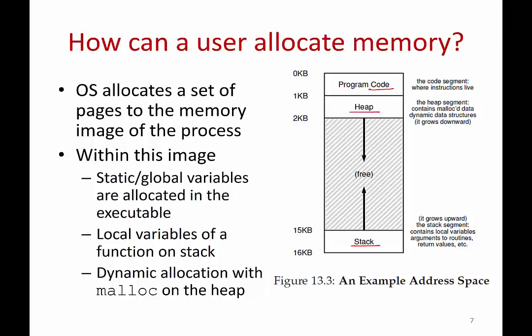In your program, depending on where you create a variable — whether it's a global variable, a local variable in a function, or a variable created via malloc — memory will be allocated in different parts of the memory image of the process. When you malloc, the memory is actually allocated from the heap while your program is running. If you just declare a static global variable, that memory is allocated when you compile the program, in the executable itself. So there is some memory allocated at compile time, some on the stack, and some on the heap. You as a programmer should decide where to allocate memory.